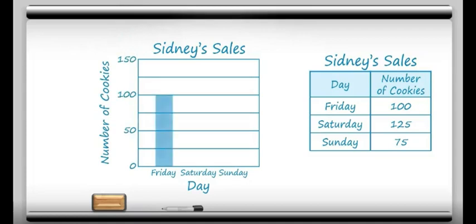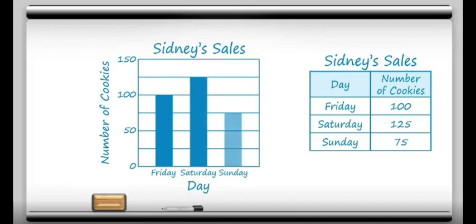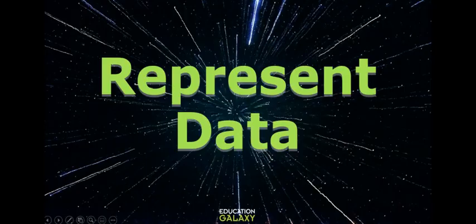So if I want to fill Friday up to 100, that's easy. Then if I want to fill Saturday to 125, well 125 is halfway between 100 and 150. And then lastly on Sunday I have 75, which is just three groups of 25, so I can raise my bar up three lines. Now it's your turn to try some problems.